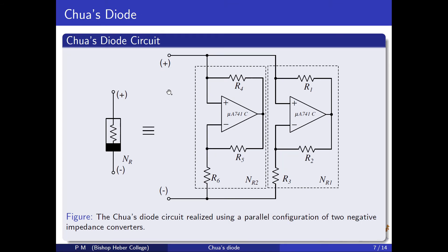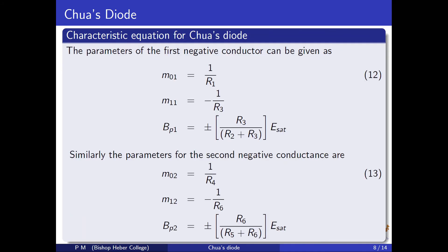Chua's Diode is a two-terminal nonlinear resistive element having a piecewise continuous odd symmetric voltage-current characteristics and is synthesized using an operational amplifier and a resistor. It can be constructed by connecting two negative impedance converters in parallel. The figure shows the Chua's Diode circuit realization using two parallel negative impedance converters. The parameters of the first NIC are M01 = 1/R1 and M11 = −1/R3, with breakpoint BP1 = ±[R3/(R2 + R3)] × E_sat. The parameters of the second negative conductance are M02 = 1/R4, M12 = 1/R6, and breakpoint BP2 = ±[R6/(R5 + R6)] × E_sat.